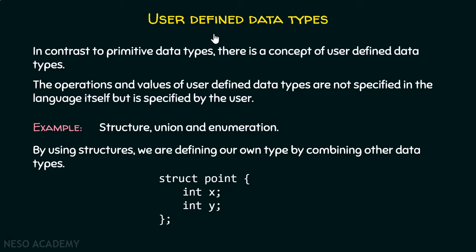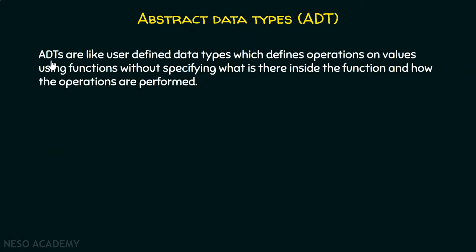Now let's understand what abstract data types are. ADTs, or abstract data types, are like user defined data types which define operations on values using functions, without specifying what is inside the function and how the operations are performed. We are not specifying anything about what is inside the function or how the operations are carried out.